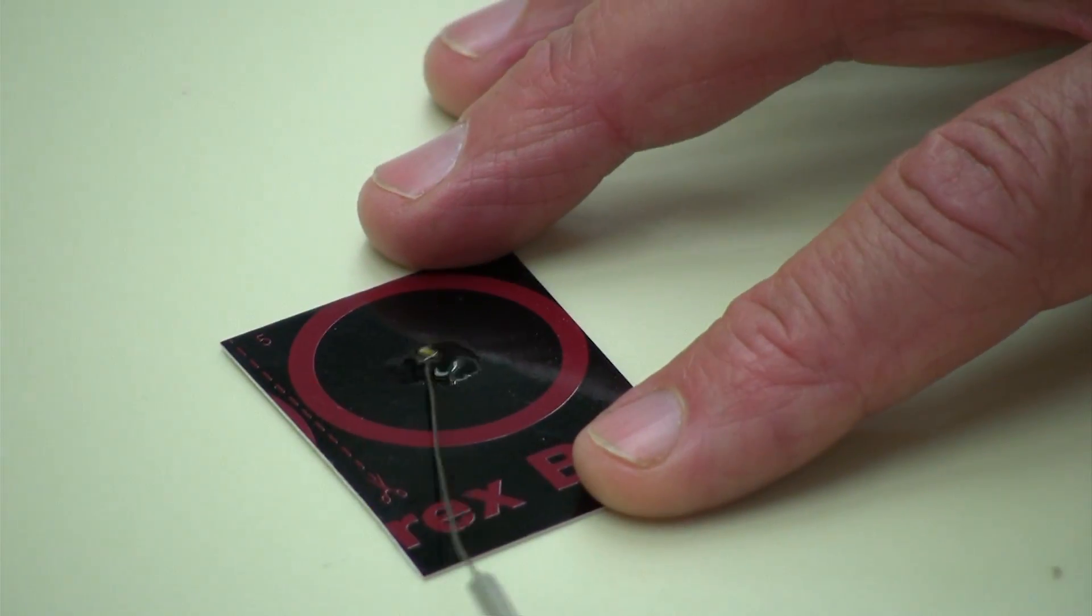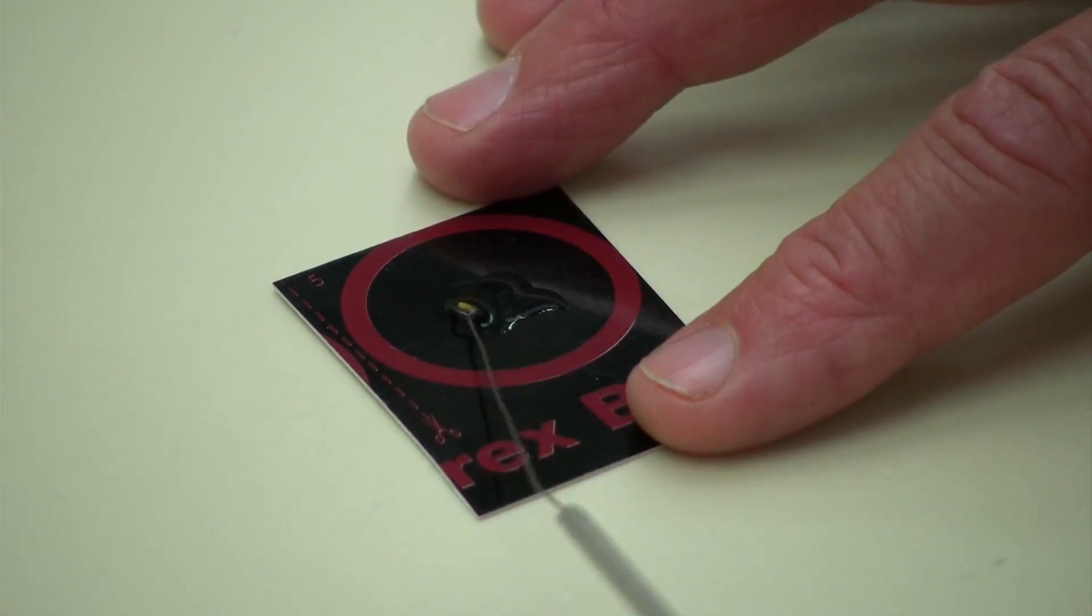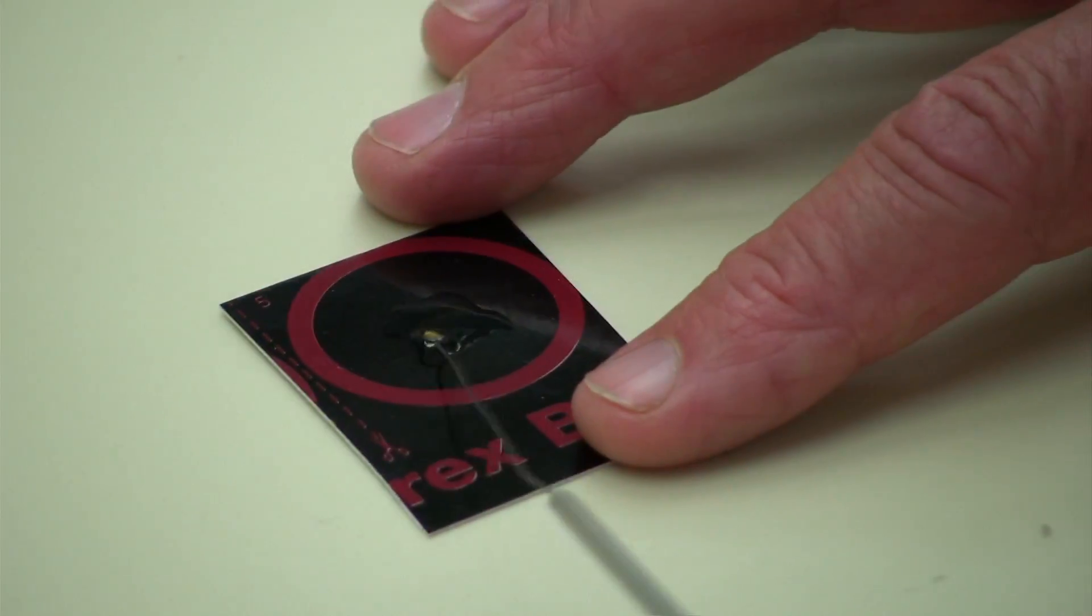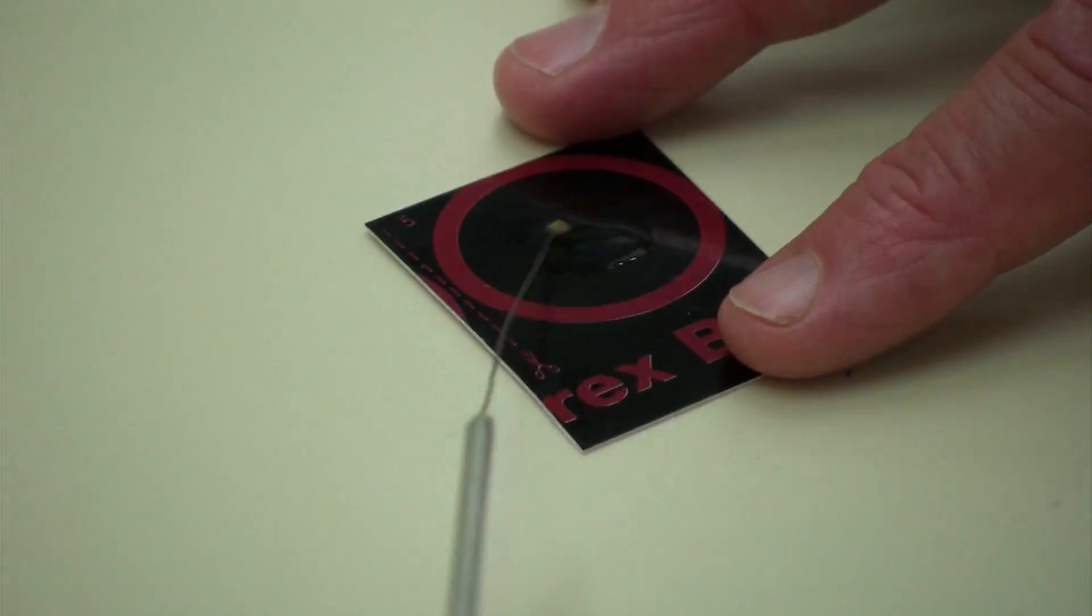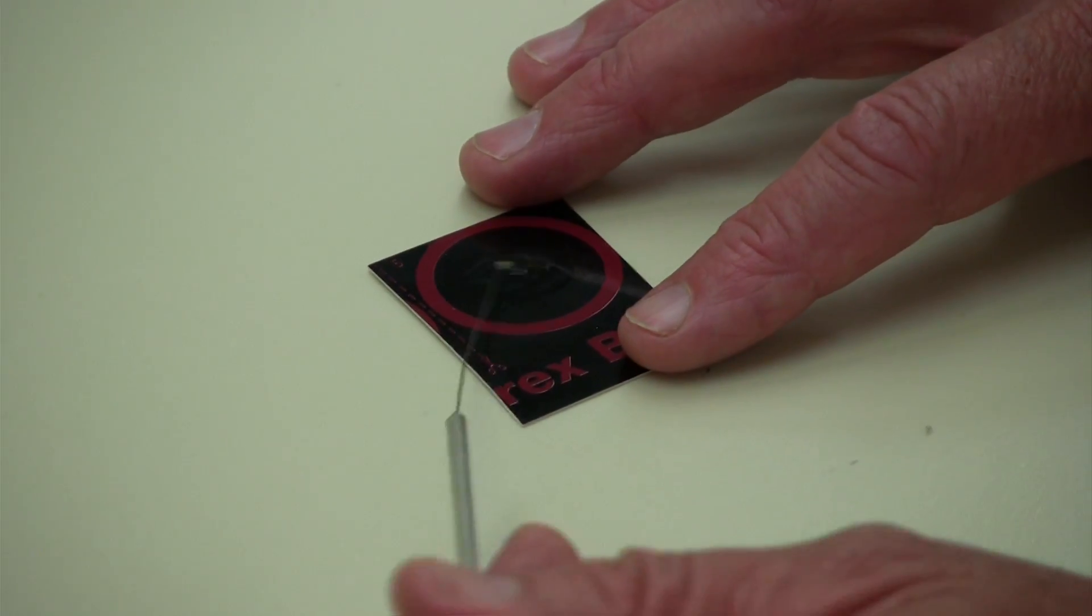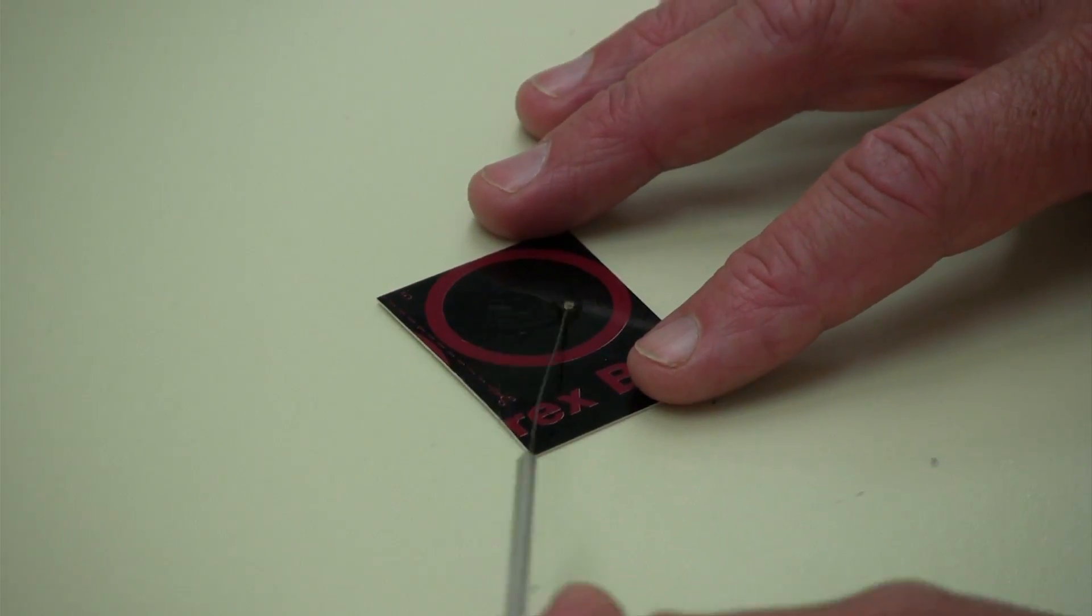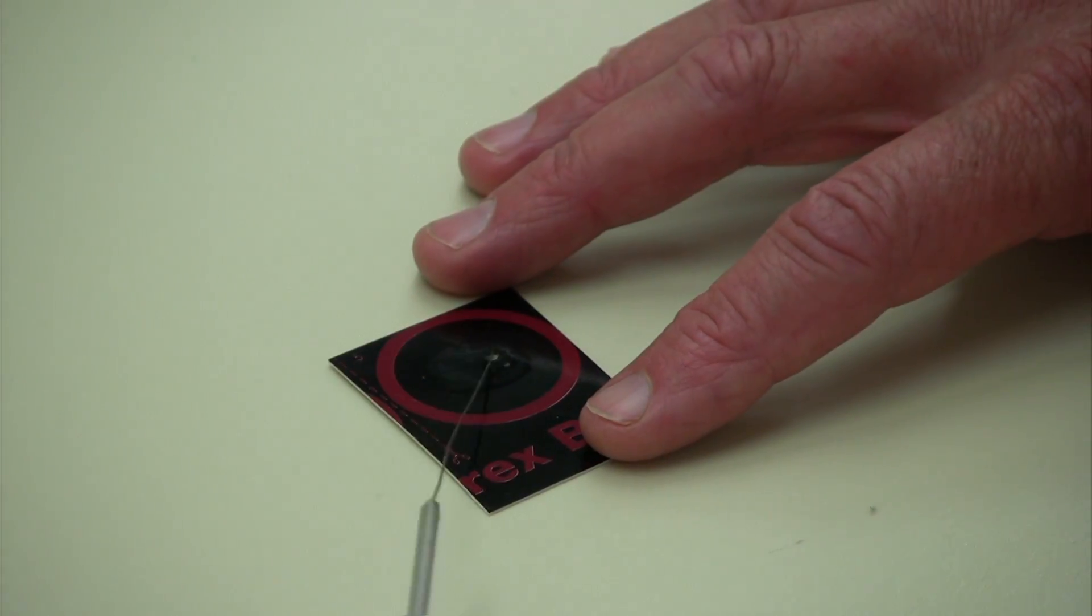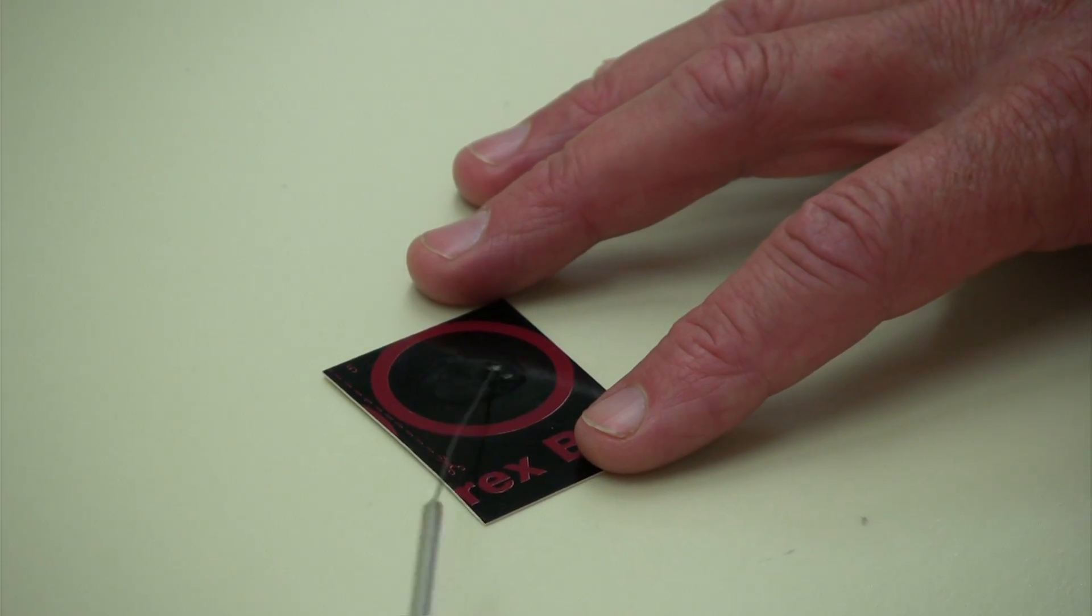You're going to make a milky suspension here. Make sure you get all the lumps out and make it as milky as you can. I think we have enough there right now.